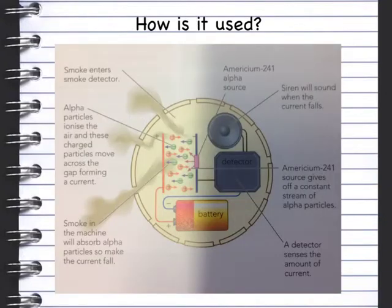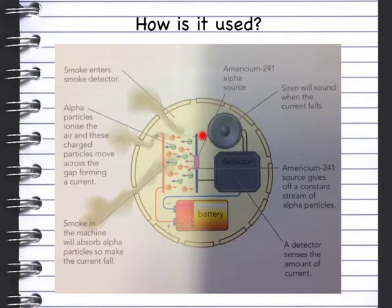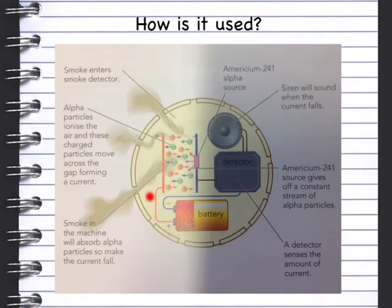How it works is you have a battery in here with a detector and a siren that sounds the alarm. In between the positive terminal here and the negative terminal here, you have air that flows through. In here you have an alpha source. What the alpha source will do is ionise the air to allow the electrons to move around in this circuit.